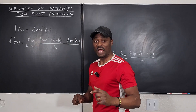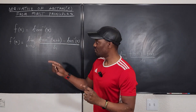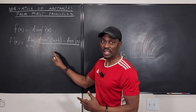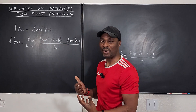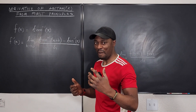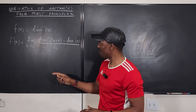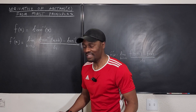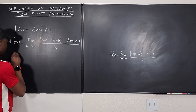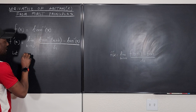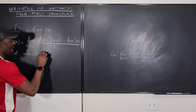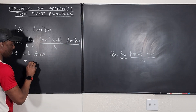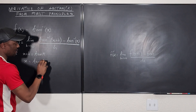Just like I did for arc sine, I'm going to do a similar thing for arctan. I'm going to make this the tangent of something so that the arctan of tangent gives me back whatever that thing is. So the best substitution is to let x plus h be equal to tan(a), and let x be equal to tan(b).